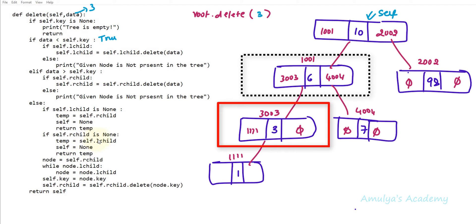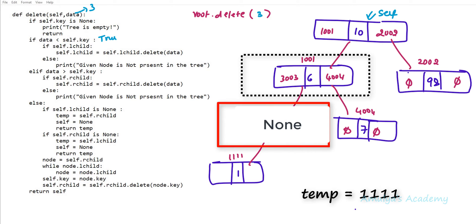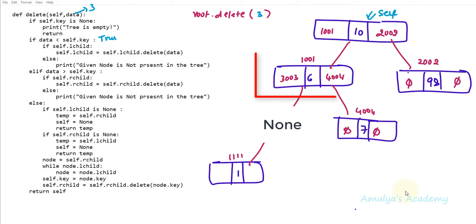Now self is the node with key 3. It checks if self.key is None — no, it is 3. It checks whether data is less than self.key — no. Data is greater than self.key — no, both are 3 and equal. So it goes to the else part. It checks if self.lchild is None — no, lchild is not None here. It checks if self.rchild is None — true. So temp = self.lchild, self is set to None, and it returns temp — which is the left child node.